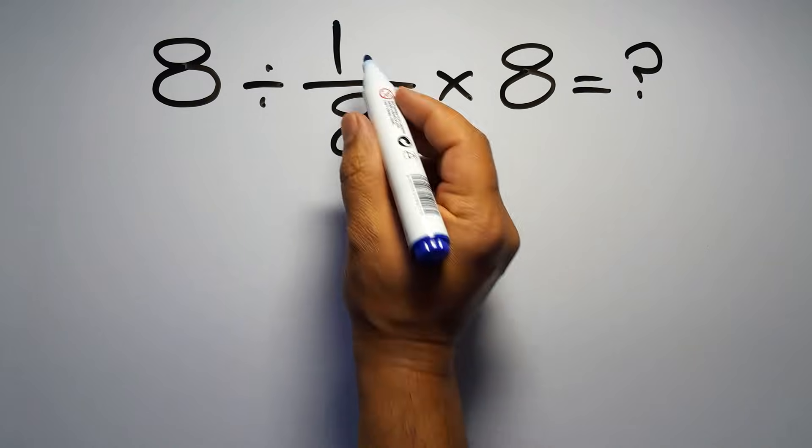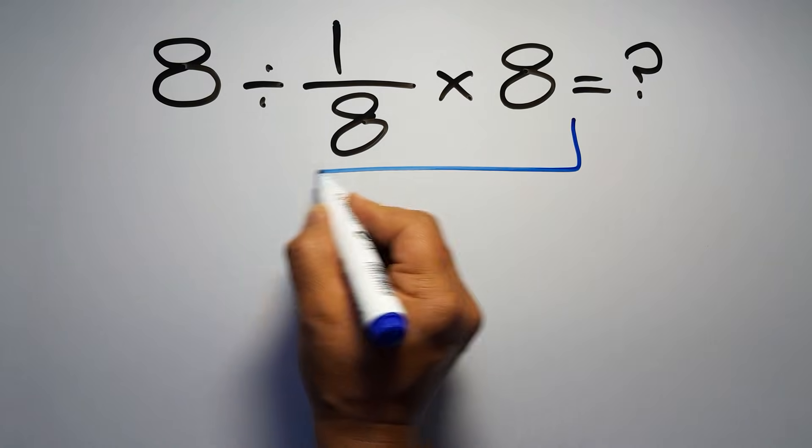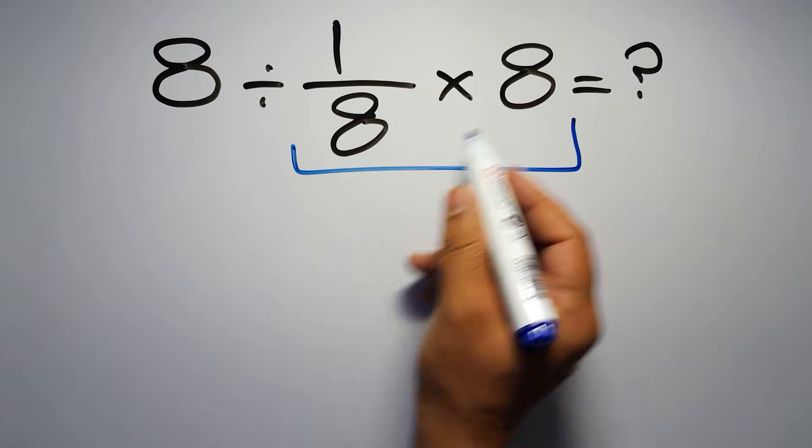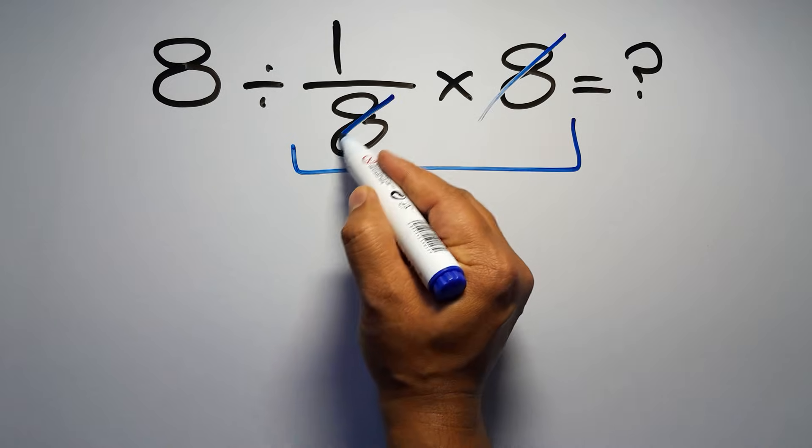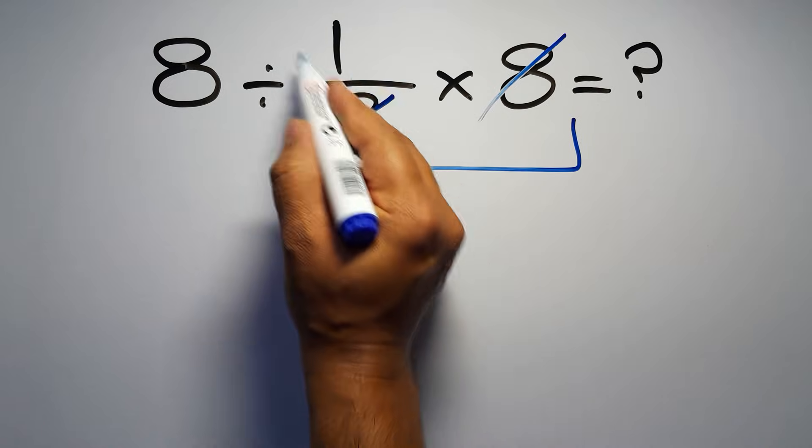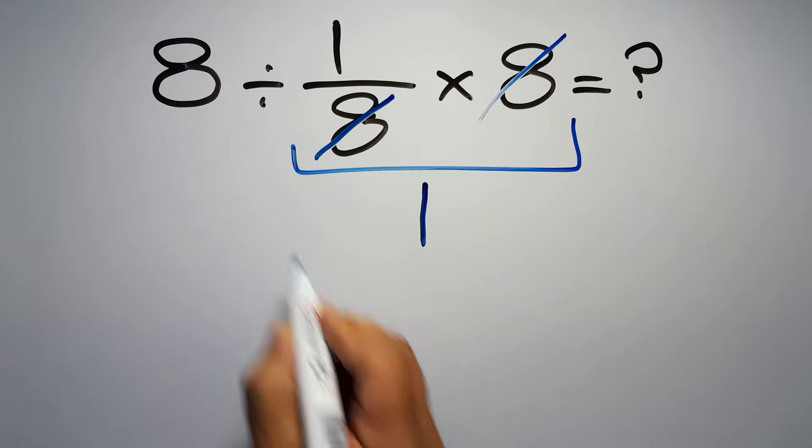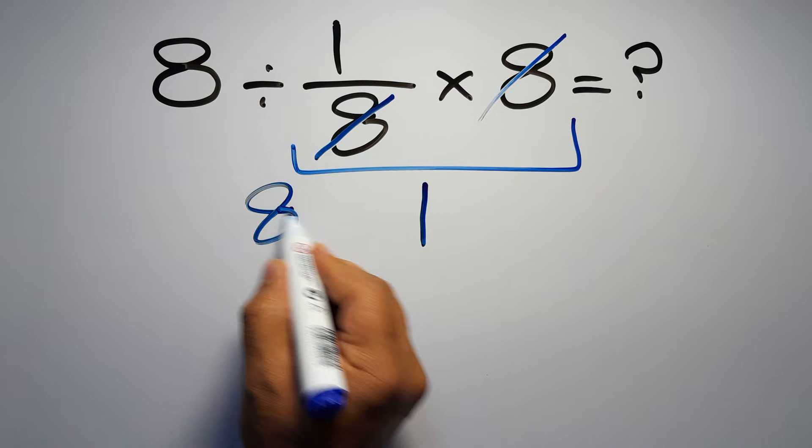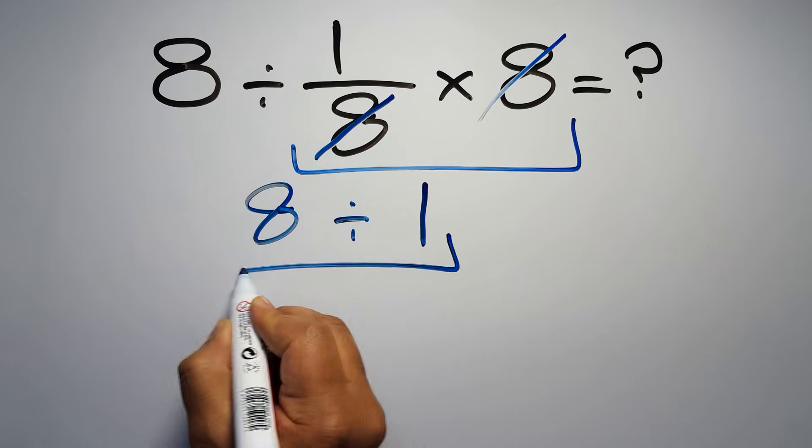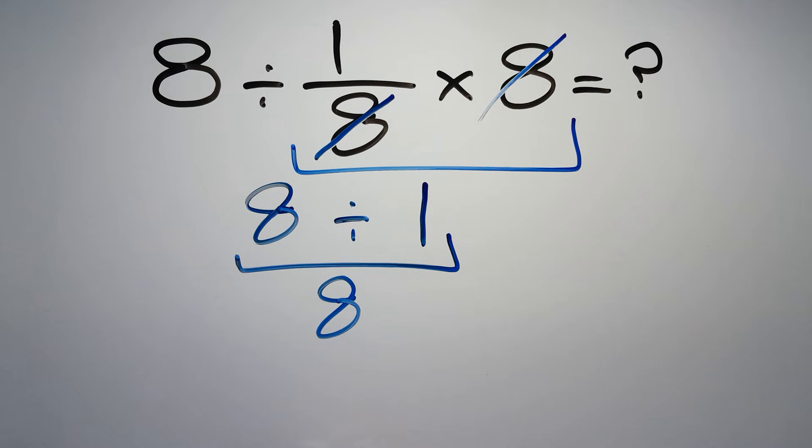First, we do this multiplication: 1 over 8 times 8. We can easily cancel this 8 and this 8, so here we have just 1, and 8 divided by 1 gives us 8. But this answer is not correct because